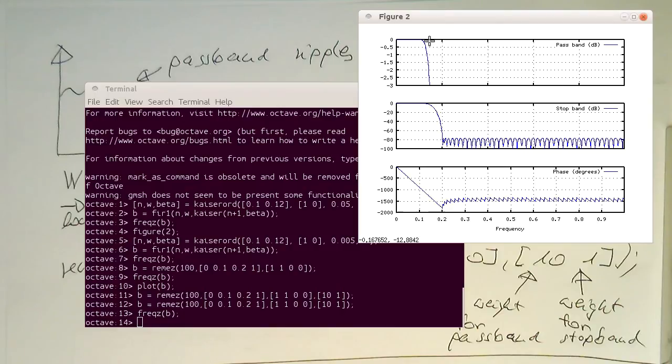We have virtually no pass-band ripple here, and this stop-band ripple here at minus 80. Now let's swap this. Let's do the 1 here and the 10 here.